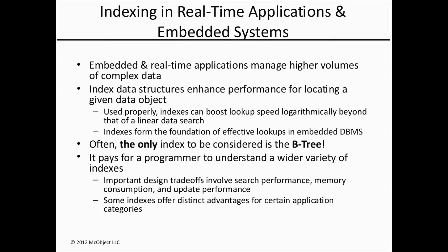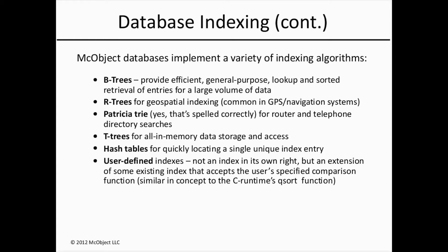But these plain vanilla indexes are often a poor fit for certain data and access patterns, such as IP routing, geospatial searching, and in-memory database systems. Therefore, it pays for a programmer to understand a wider variety of indexes that may, at first glance, appear more exotic. Diverse index types enable important design tradeoffs involving search performance, memory consumption, and update performance. And some indexes offer distinct advantages for certain application categories.